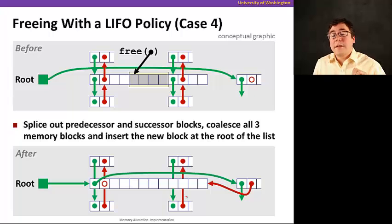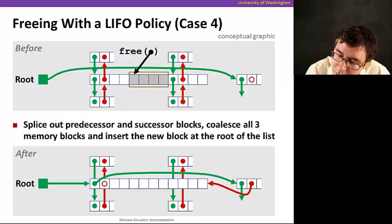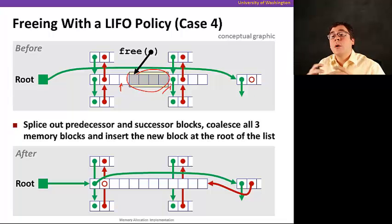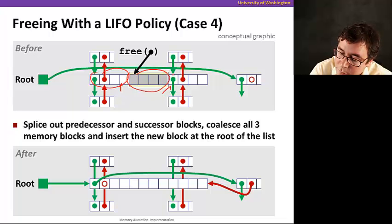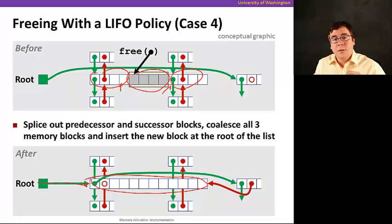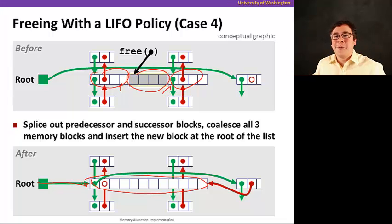The fourth and last case is when you free a block and there are free blocks on both sides that can all be coalesced into one large block. We remove the old blocks from the list, create a new large block, and insert it at the beginning of the list so the root points there. Hopefully this happens a lot so we have more large blocks available.